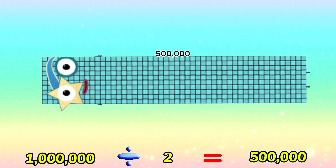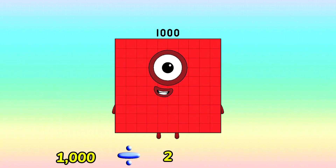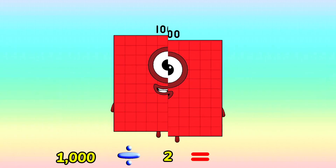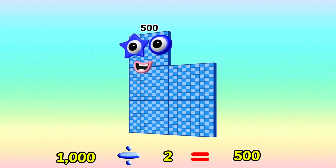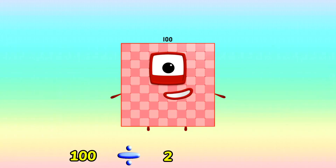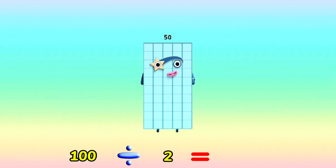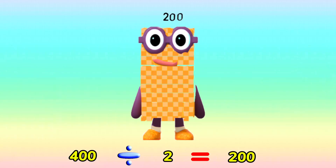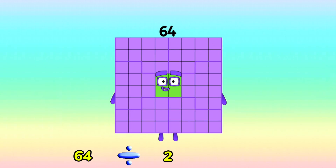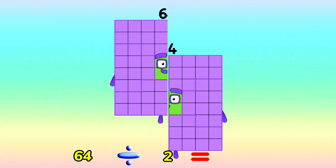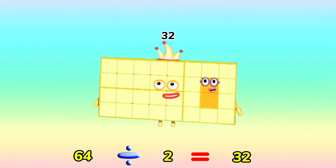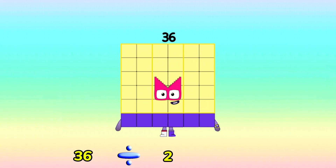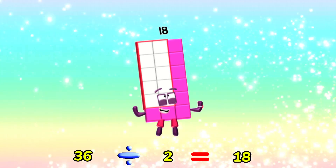1,000,000 divided by 2 is equals to 500,000. 1,000 divided by 2 is equals to 500. 100 divided by 2 is equals to 50. 400 divided by 2 is equals to 200. 64 divided by 2 is equals to 32. 36 divided by 2 is equals to 18.